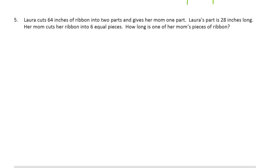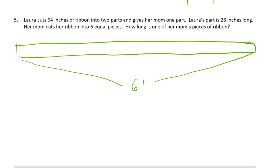Laura cuts 64 inches of ribbon into two parts and gives her mom one part. Laura's part is 28 inches long. Her mom cuts her ribbon into six equal pieces. How long is one of her mom's pieces of ribbon? So like pieces of ribbon, that's just a tape diagram. Because a ribbon looks like a piece of tape. Which is why tape diagrams are called tape diagrams. Alright, so this whole thing is 64 inches. She cuts it into two parts. Here's Laura's part. And that's 28 inches. And that her mom cuts her ribbon into six equal pieces.